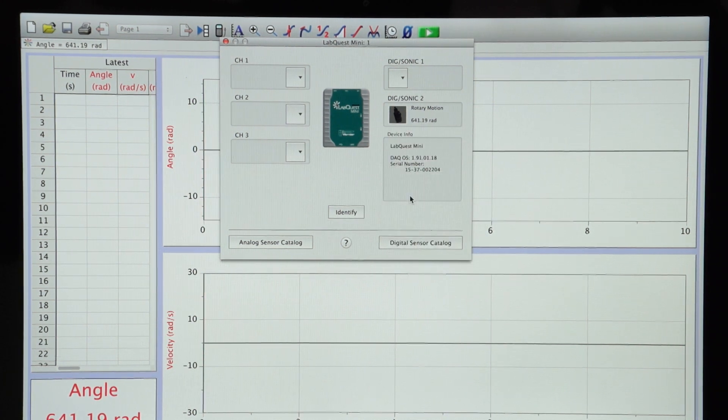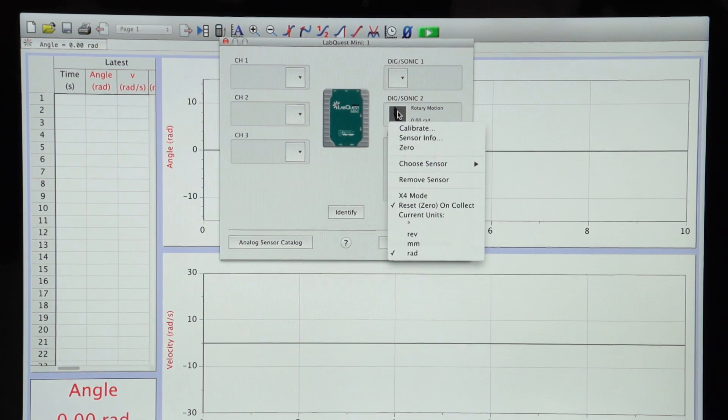If I turn that off, then I now have at one degree resolution, and I have up to 30 revolutions per second of angular velocity that I can measure.